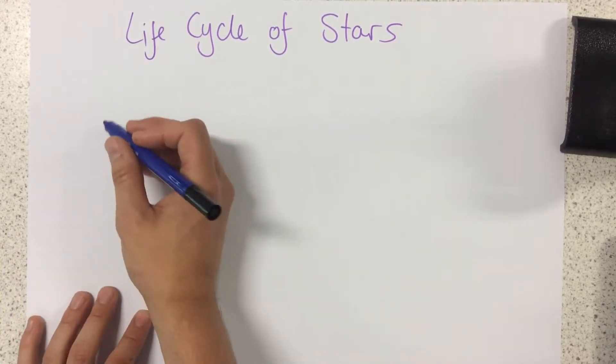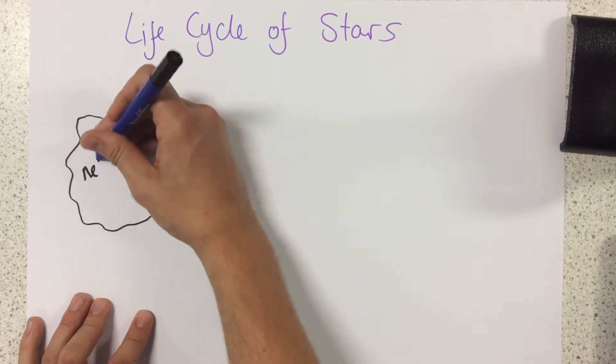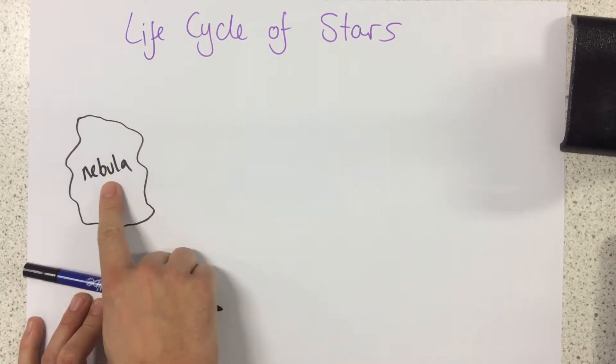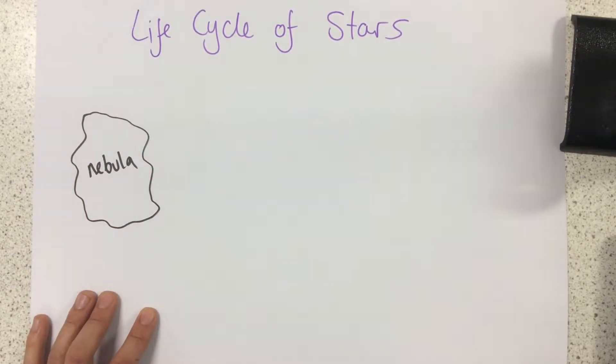First of all, let's start with the formation of a star. They start off as a nebula. Now a nebula is just an enormous cloud of dust and gas.